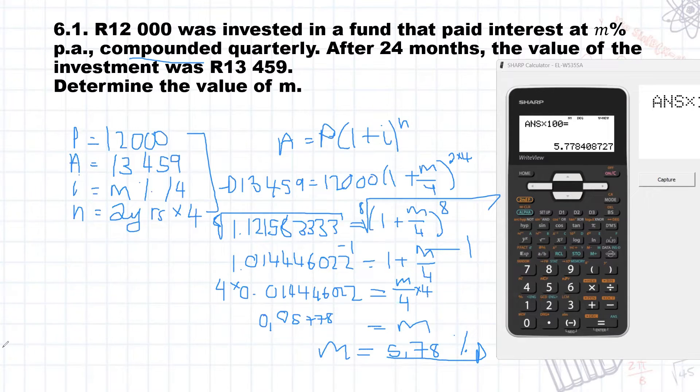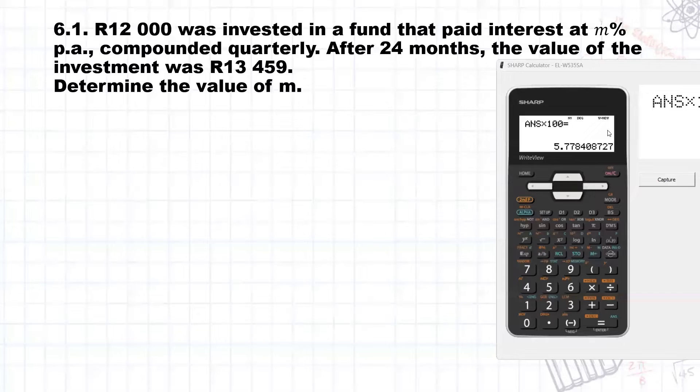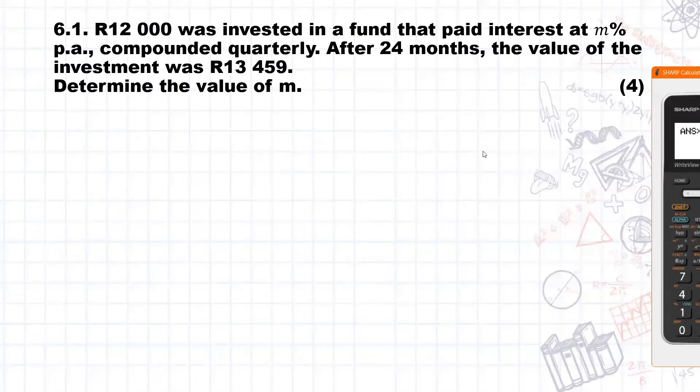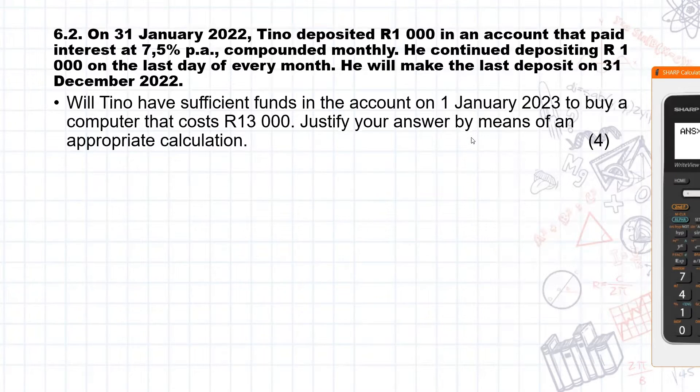Let me clear that away. And let's move on to 6.2. 6.2 says, on the 31st of January 2022, Tino deposited R1,000 in an account that paid interest at 7.5% per annum compounded monthly. He continued depositing R1,000 on the last day of the month, and he will make the last deposit on the 31st of December 2022.